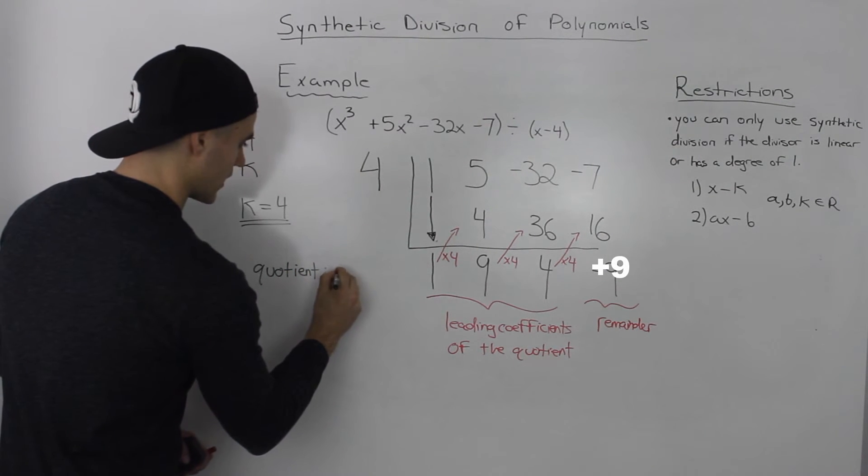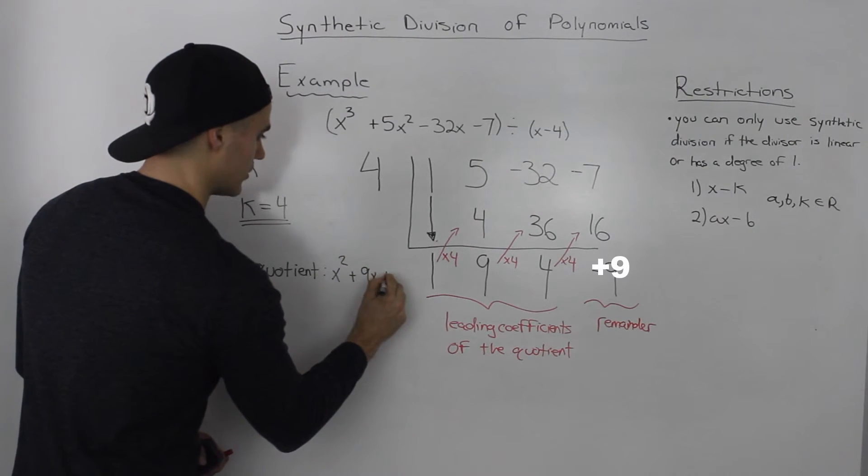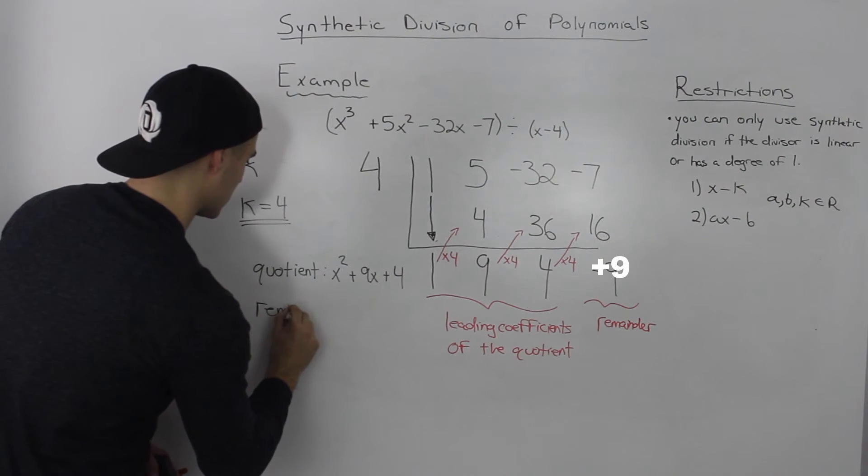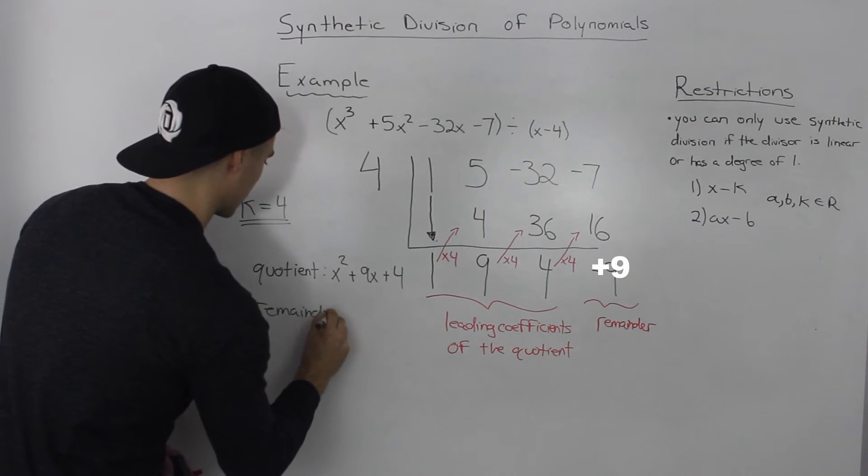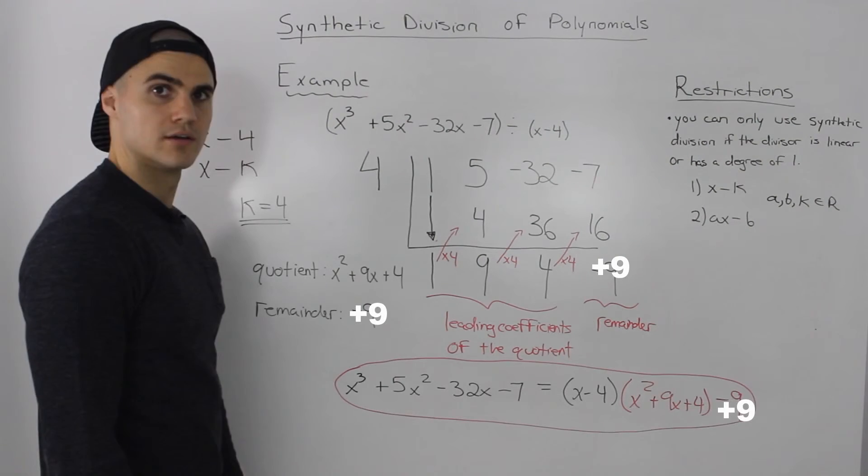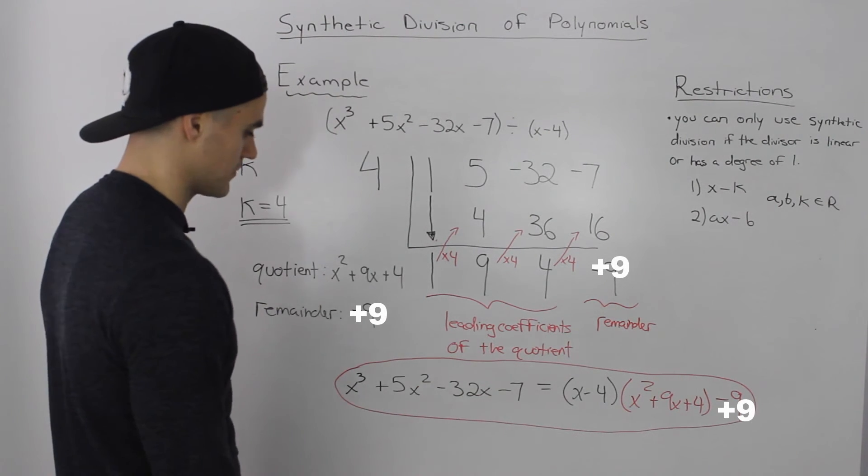And these would be the leading coefficients. So our quotient, in this case, would be 1x squared, or just x squared, plus 9x, plus 4. And our remainder would be positive 9.